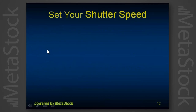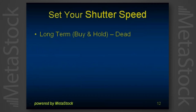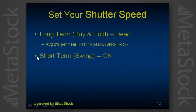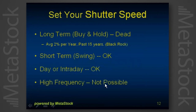Our first rule to trade in this environment is to set your shutter speed. The analogy is like having a camera — if you have a long shutter speed, the picture is blurry. That's what we call long-term trading: it's a long shutter speed, it's blurry trading, and it's basically dead. BlackRock did a study showing basically 2000 to 2013, 2% a year on average — just no way to make money. Now short-term and swing trading, day or intraday — these are okay. High-frequency trading has a lot of buzz, but individual traders at home don't have trunk lines to the internet or a stack of supercomputers. So we have the middle ground: short-term and intraday trading.